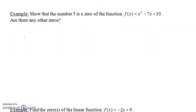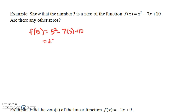Let's do an example. First, show that the number five is a zero of the function f of x equals x squared minus seven x plus ten, and the question is: are there any other zeros? To show that five is a zero we just need to show that f of five is zero. Notice f of five is five squared minus seven times five plus ten, and that's 25 minus 35 plus ten, which is zero. So five really is a zero of the function because when we plugged in five we got an output of zero.